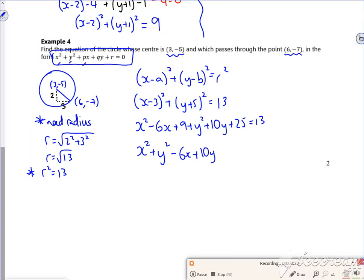Minus 6x plus 10y, the number's on the left, so I've got 9. 9 and 25 is what, 34, taking the 13 is 22, is it? Have we got somewhere, no it's not.